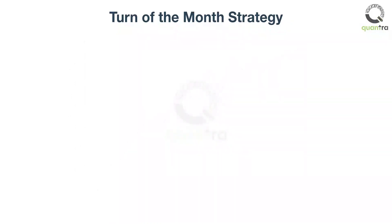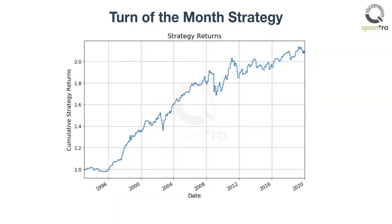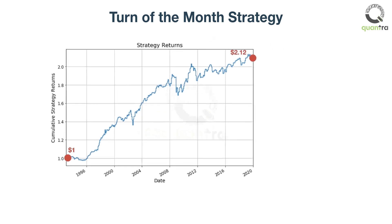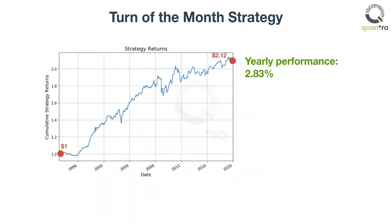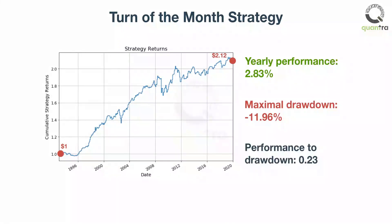As the chart of the strategy for the years 1993 to 2019 shows, the turn-of-the-month is profitable, and this pattern is still alive in today's time. $1 invested in 1993 would be more than doubled, to settle at $2.12 in the year 2019, with a yearly performance of 2.83%. Such a strategy has a maximal drawdown of minus 11.96%, which results in a performance to drawdown ratio of 0.23.